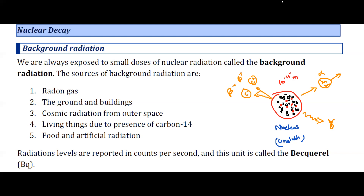Sources of background radiation include radon, a radioactive gas present in our atmosphere. Ground and building materials also contain radioactive particles. Cosmic radiation comes from outer space as charged particles and gamma radiation. Living things contain carbon-14, a radioactive isotope of carbon — unlike carbon-12, which is not radioactive. Carbon-14 is used in carbon dating to find the age of plant samples.